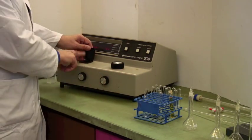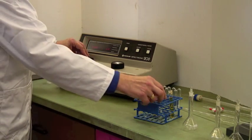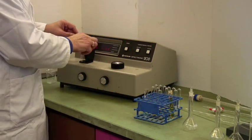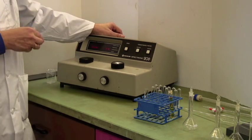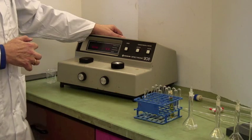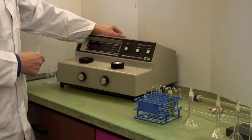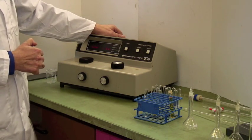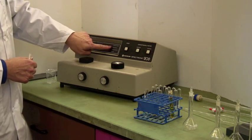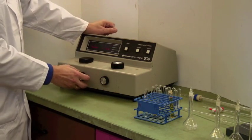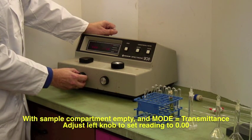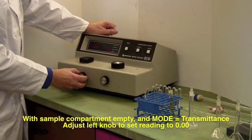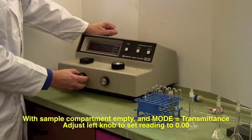Now, the sample compartment is here, and if you listen, when there is nothing in there, there is a shutter in the light path. So there is zero light getting as far as the detector. So with this in transmittance mode, I adjust this so that I have got zero percent of the transmission of the light being transmitted to the detector.